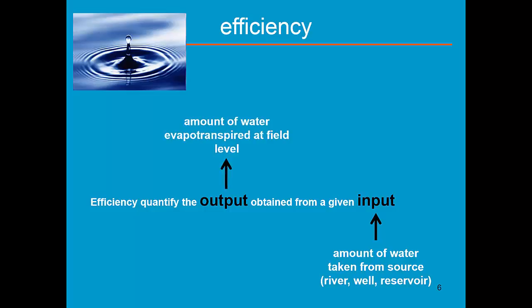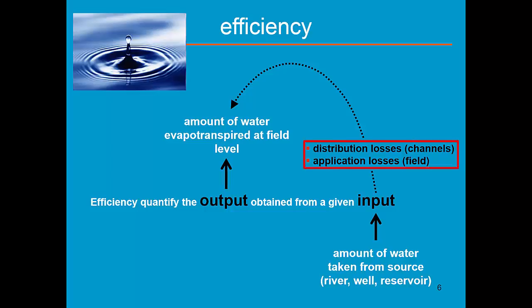And the output is then the amount of water lost at the field by evapotranspiration. Now a lot of water taken at the input will be lost, either by distribution losses from the source to the field, either by application losses at the field during the irrigation process.